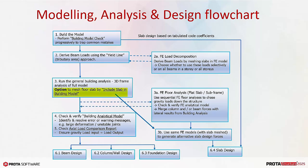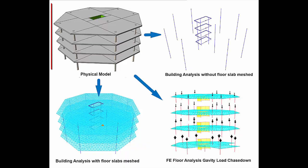Slab design can also use results of building analysis with story slab included and meshed. Let us now explore in more detail the different analysis options, namely building analysis and FE floor analysis. This example physical model is a flat slab model supported by columns and lift core wall.